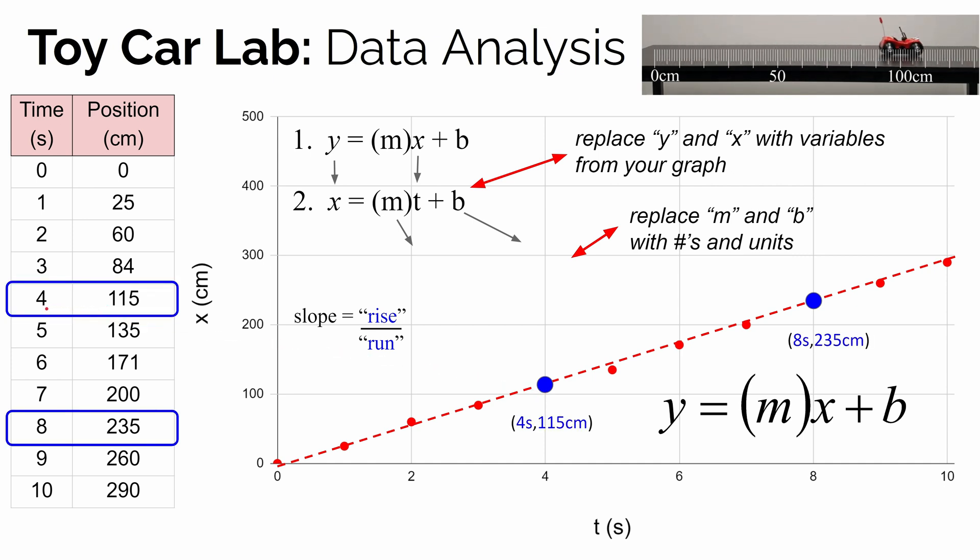Looking back over at our data table at the fourth second, it was at a position of 115 centimeters. And at the eighth second, it was at a position of 235 centimeters. To take the rise divided by the run, let's figure out the rise first. From 115 centimeters up to 235 centimeters, that's a rise of positive 120 centimeters. The run is how far you go over horizontally. You're going from four seconds to eight seconds. If we now take the rise of 120 centimeters divided by the run of four seconds, we get 120 centimeters divided by four seconds. The slope, 120 divided by four is positive 30. The units are centimeters divided by seconds. So the slope of our line is positive 30 centimeters per second.